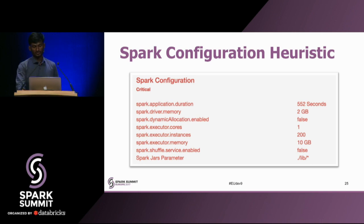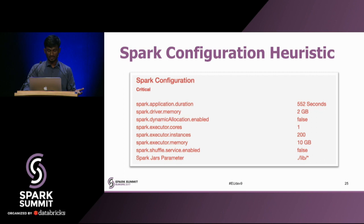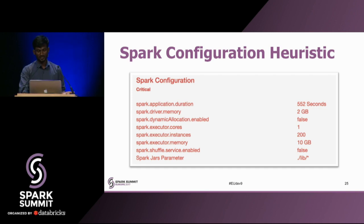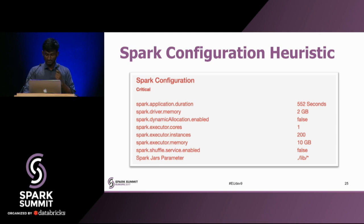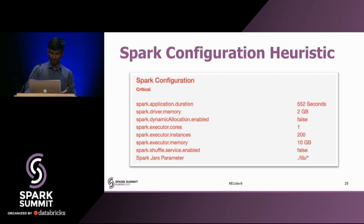Then we have a Spark configuration heuristic, which looks into the configuration values the user sets. If the user is requesting way too high executor memory or driver memory, or if the user is setting the jars parameter to lib/* — loading all jars — from our experience, users don't tune their dependencies, so a lot of transitive dependencies get downloaded and all those jars get copied to the distributed cache, which is not required at runtime. This heuristic flags it and recommends users to explicitly set which jars they want to copy into the distributed cache.